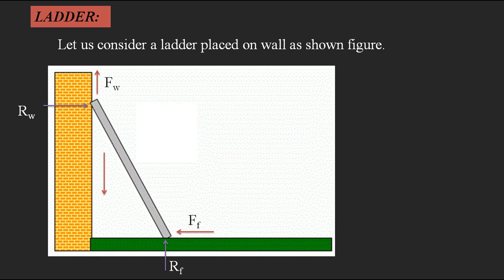We represent the normal reaction between the wall and the ladder as Rw, and between the floor and the ladder as Rf. Even with all these forces acting, there is no motion for the ladder — up to a certain limit the ladder can maintain equilibrium. We assume an equilibrium condition, where the sum of all forces equals zero.